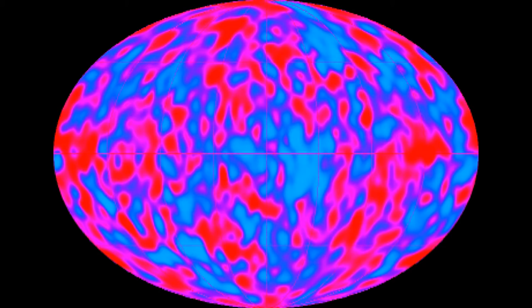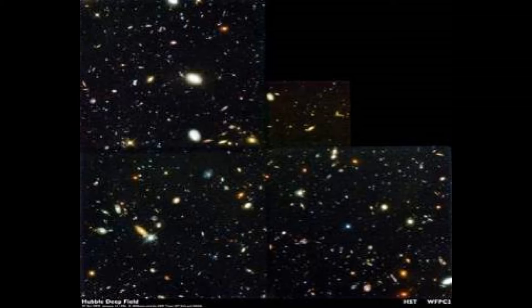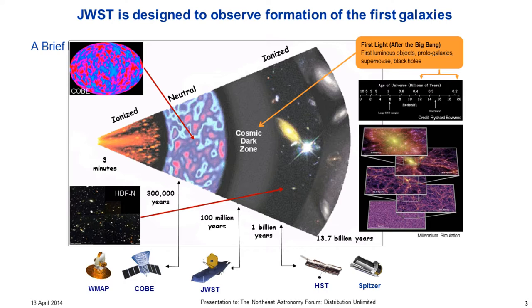JWST was conceived in the mid-90s, 1996, as a mission to connect the dots between this famous image obtained by the COBE satellite — for which a Nobel Prize was given — which is a picture of the oldest light in the universe, and the famous Hubble Deep Field image, which when it was taken was the image with the largest look-back time obtained by Hubble. We're trying to connect the dots between these images in an evolutionary context.